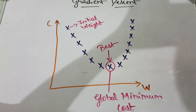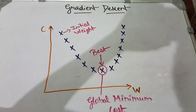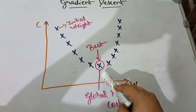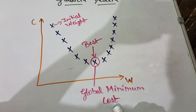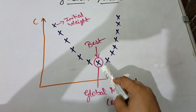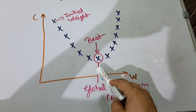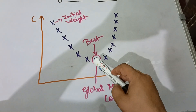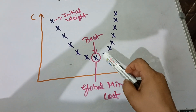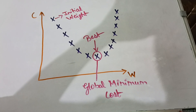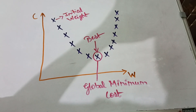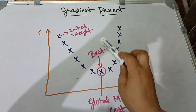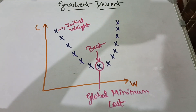This is the initial weight, and when it reaches the best point, that is the global minimum cost — the best result, where the cost is minimum and the weight is also minimum. That is the best solution. So gradient descent is an optimizing algorithm for finding the minimum of a function.